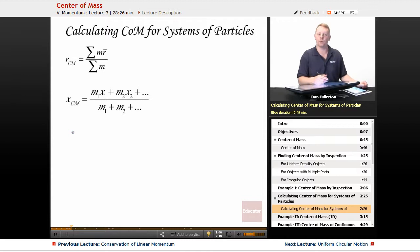Or if you wanted to look at coordinates, an x center of mass coordinate would be your first mass times its x position, plus your second mass times its x position, and so on, divided by the sum of the masses.